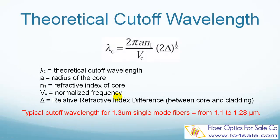Here is a formula to calculate the theoretical cutoff wavelength of a single mode fiber. Lambda c is the theoretical cutoff wavelength. A is the radius of the fiber core. N1 is the refractive index of the core. VC is the normalized frequency. Delta is the refractive index difference between the fiber core and cladding.